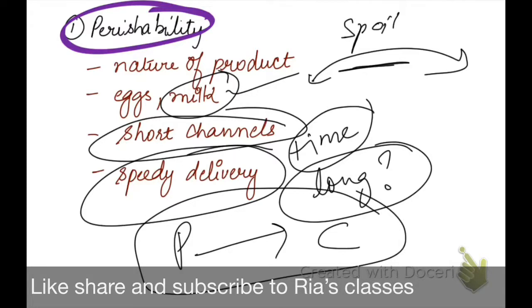If we use short channels, then products like bread and milk are delivered timely and speedily to the customer, and the product does not get spoiled.